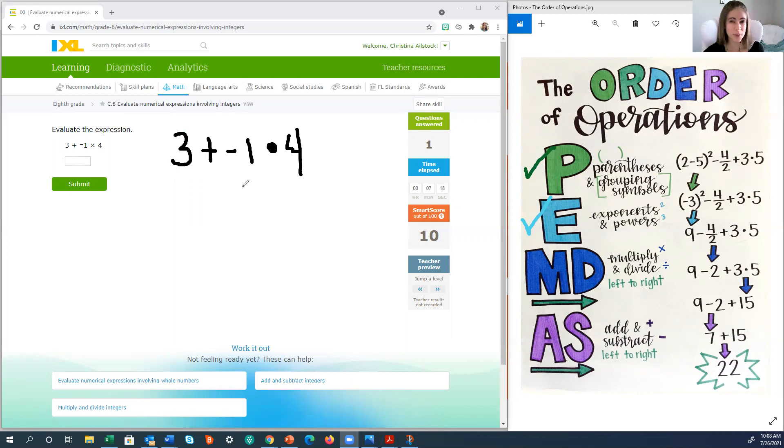Now, what am I multiplying? I hope what you said or what you're thinking is that you're multiplying a negative 1 by 4 because it's 3 plus negative 1, which means we need to multiply with negatives.